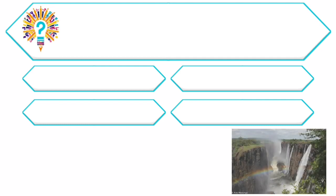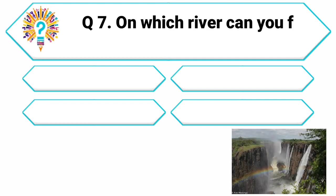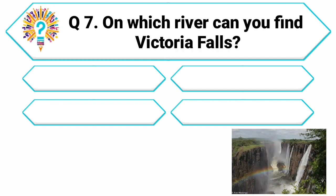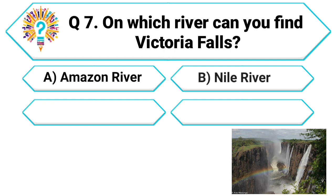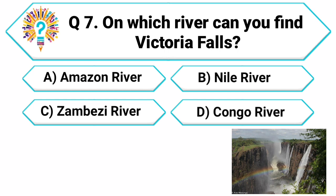Question 7. Now, we are off to explore the stunning Victoria Falls. On which river can you find Victoria Falls? Your options are: A. Amazon River, B. Nile River, C. Zambezi River, D. Congo River.